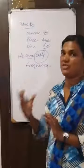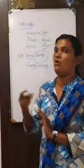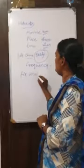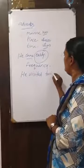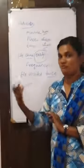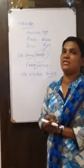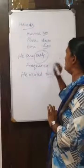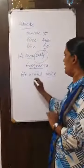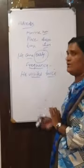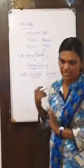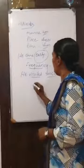The fourth one is adverbs of frequency — frequency means how many times an action is performed. For example: he visited twice, he visited regularly, he visited always. How many times or how often the action is performed. We can mention time as a day or a week.